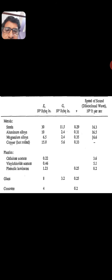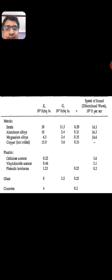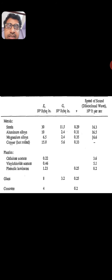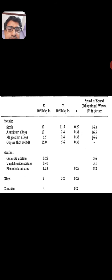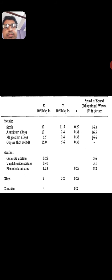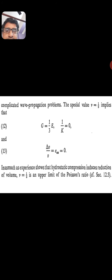If you see the table clearly, steel has the highest modulus of elasticity, then copper. Concrete does not have as much modulus of elasticity as steel. In steel, the modulus of elasticity and modulus of rigidity are much higher, so we prefer steel for buildings and power structures.